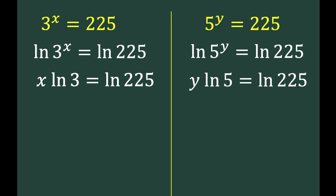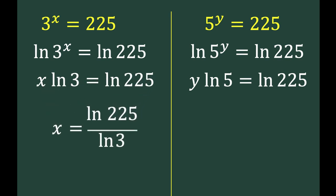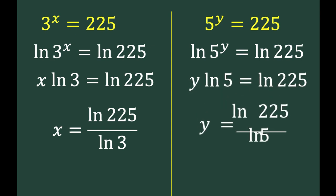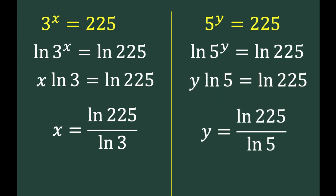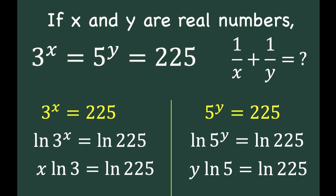Now let's solve the left equation for x to arrive at x equals ln of 225 over ln of 3. Then on the right, we have y equals ln of 225 over ln of 5.